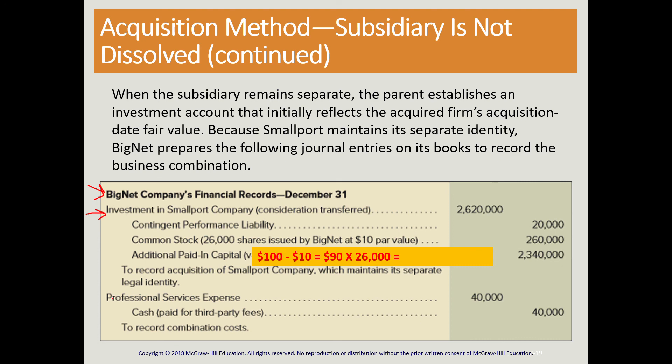This is the entry Big Net makes on their financial statements. There is no entry to transfer Small Port's assets and liabilities to Big Net's financial records because Small Port continues to exist as a separate entity, so that journal entry does not appear in this example. This concludes our presentation.